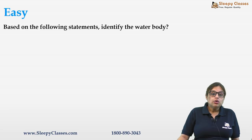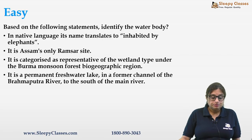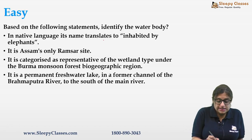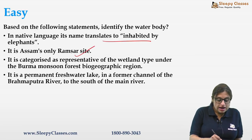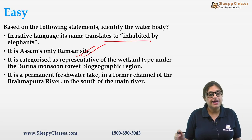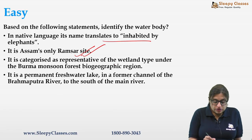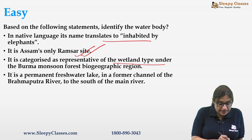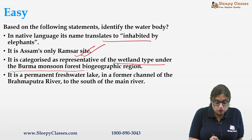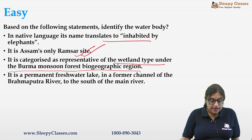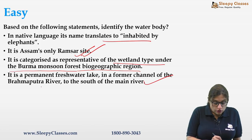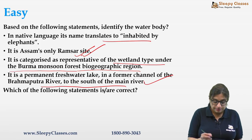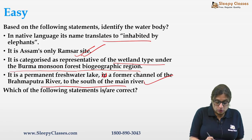The next question asks you to identify a water body whose name in its native language translates to 'inhabited by elephants.' It is Assam's only Ramsar site — a huge giveaway if you've studied Ramsar sites carefully. It is categorized as representative of the wetland type under Burma Monsoon Forest biogeographic origin, and is a permanent freshwater lake in a former channel of the Brahmaputra river, to the south of the main river.